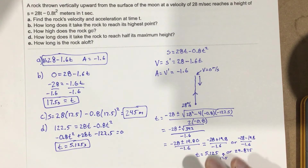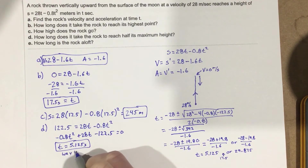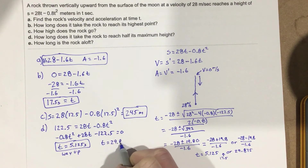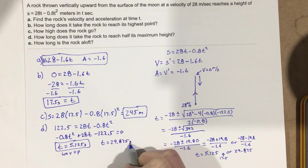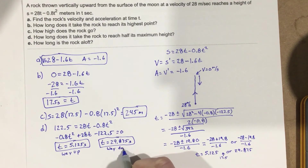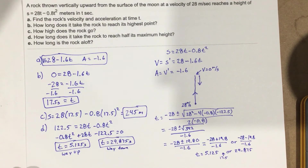You could also note that on the way down, the rock reaches half its maximum height again at t equals 29.875 seconds. Technically both times are valid answers, but the assumption is they're asking about the way up.